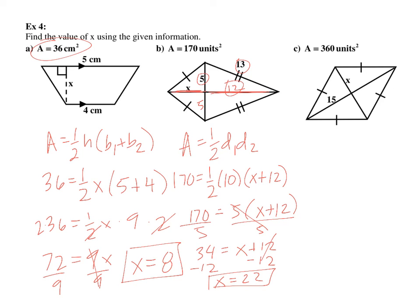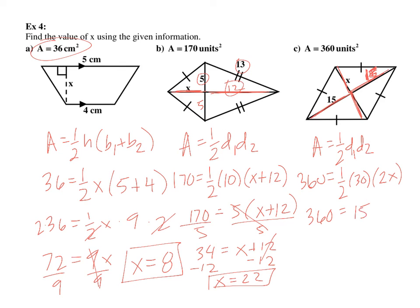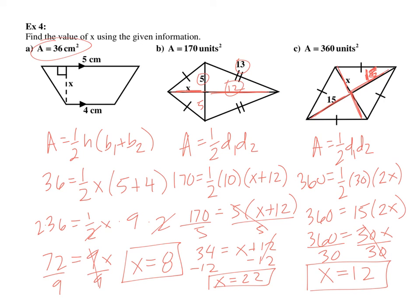For the next problem, we have a rhombus, so the area is half of diagonal 1 times diagonal 2. Diagonal 1 is 30 (since each half is 15). The other diagonal is 2x (since each half is x, and we also have 5 here). The area is 360, so 360 equals 15 times 2x, giving 360 equals 30x; divide by 30 and x equals 12. If you have any questions, please make sure to ask. Begin the assignment.